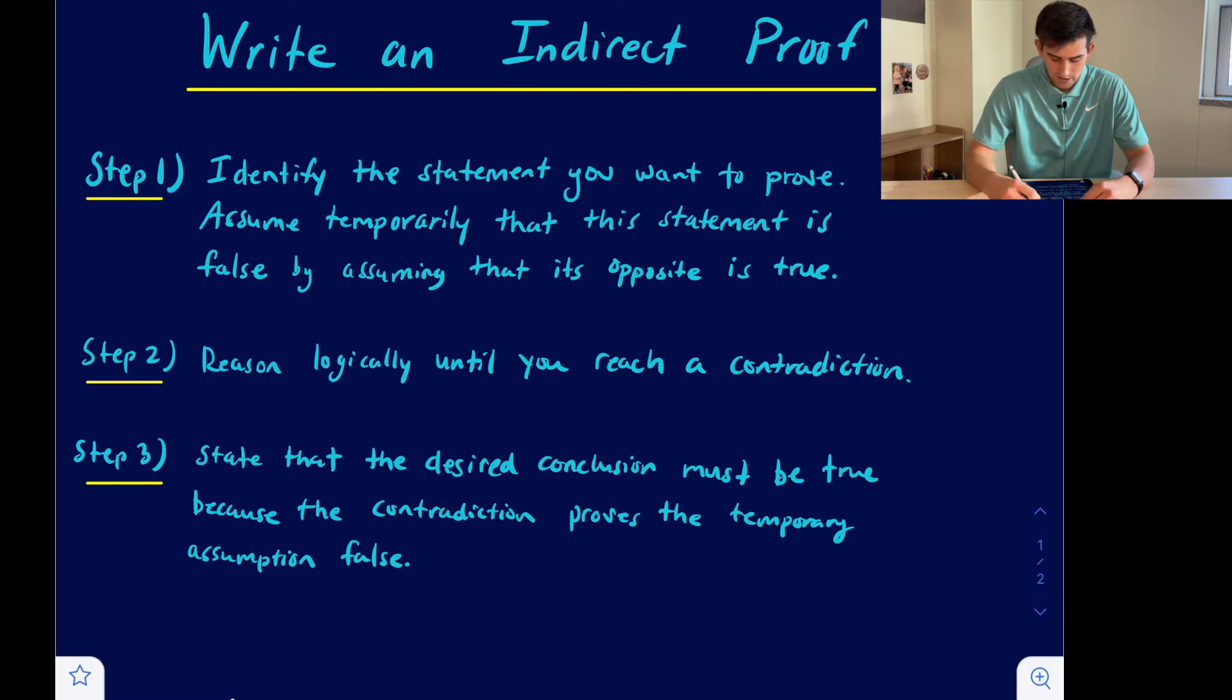Step two, we're going to reason logically until we reach a contradiction, and then at that point we're going to state that the desired conclusion must be true because the contradiction proves the temporary assumption false.